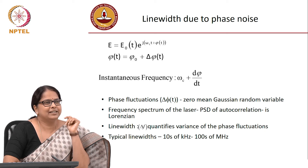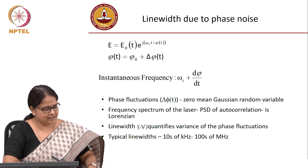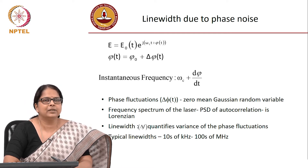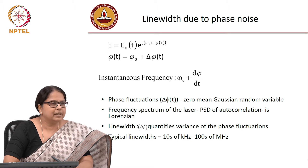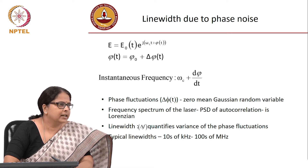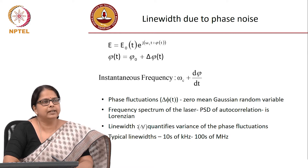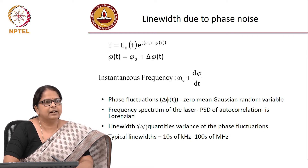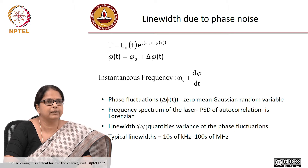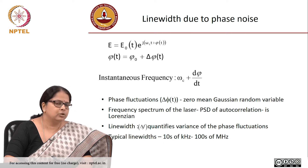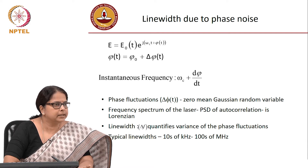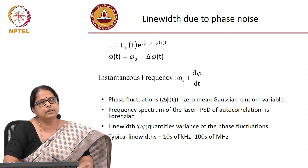We talked about noise sources in the laser, and one source we discussed was intensity noise where the power fluctuates. We learned how to quantify it — RIN, relative intensity noise, is the most common way. That intensity noise is a function of frequency, so the spectrum of RIN matters because your detector bandwidth could be limited, and you need to consider noise only within that bandwidth.